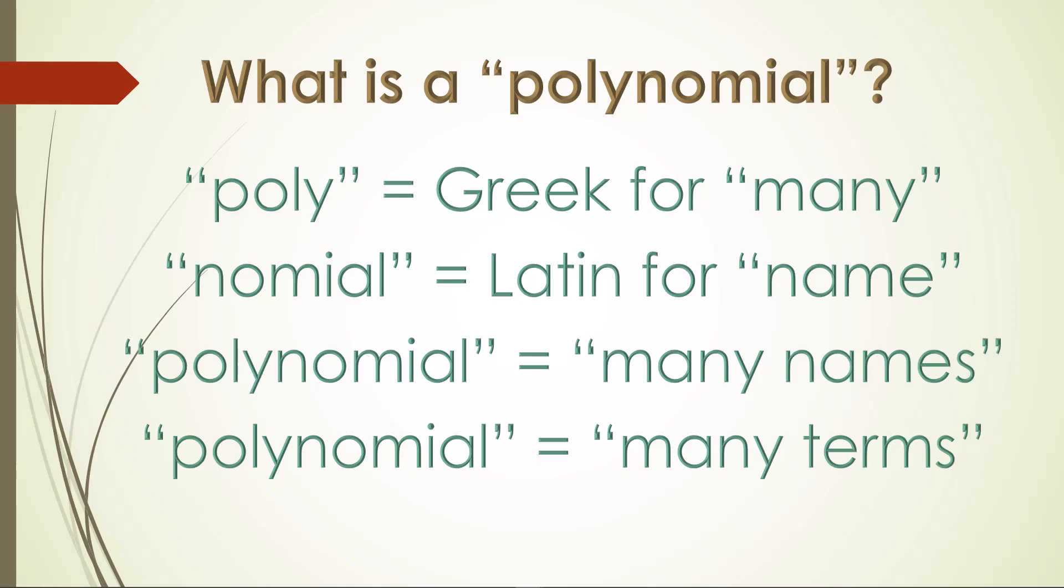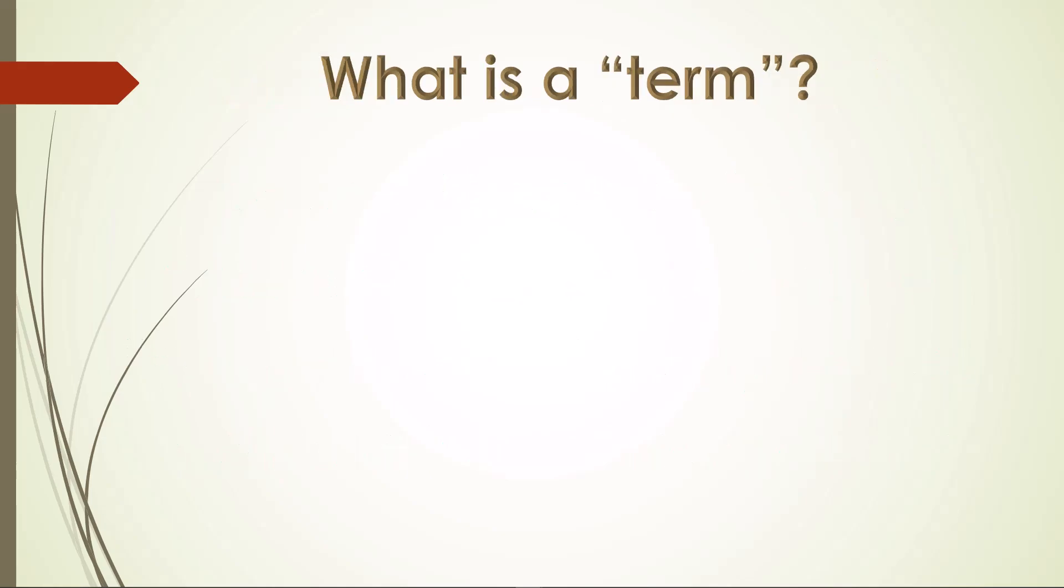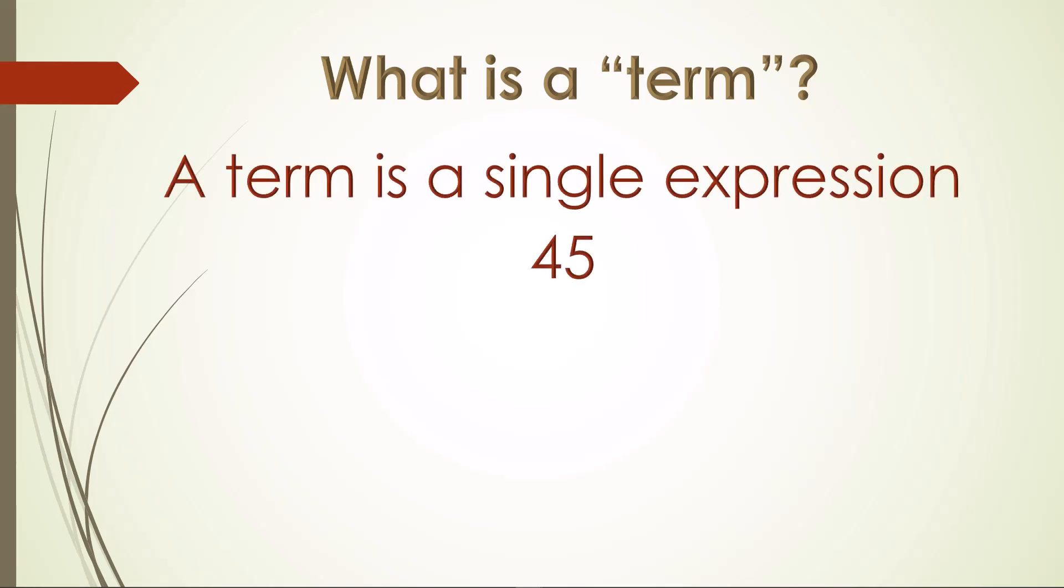Let's review what a term is, and some other names we'll use in this lesson. What is a term? Well, a term is a single expression, like 45, or the variable x, or the combination of 45 and x multiplied together. All of these are single terms used in mathematical expressions, equations, and inequalities, as you have seen many times in previous lessons.